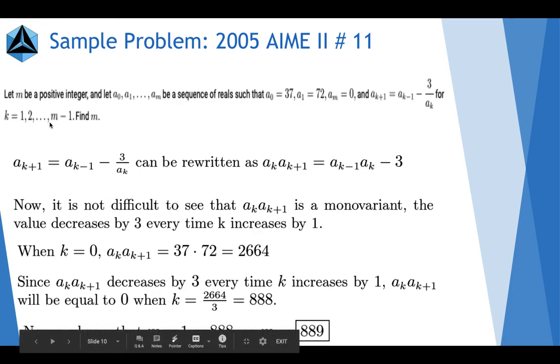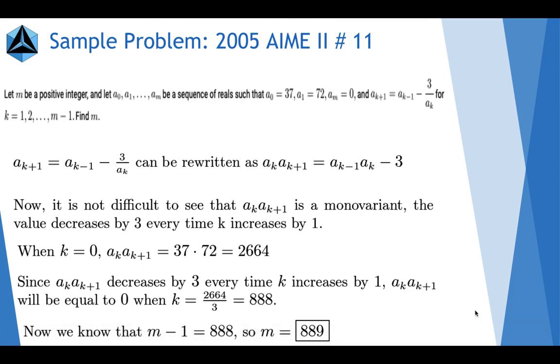Now be careful here because I would be tempted to just say 888 is the answer, but keep in mind that what we just found is m minus 1, not m, and we are looking for m. So m minus 1 equals 888, so adding 1, you find that m equals 889. It's a fairly simple problem, but if you didn't use monovariants, it would be a lot more complicated.